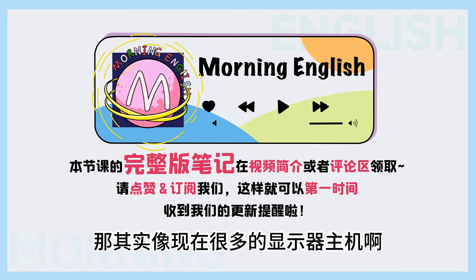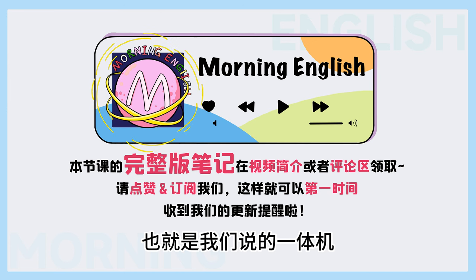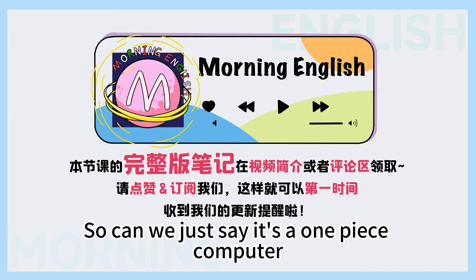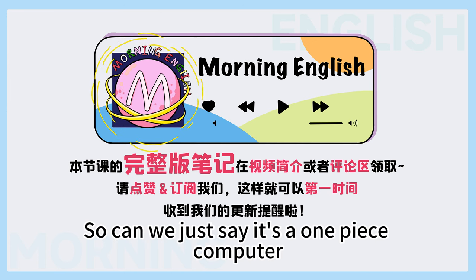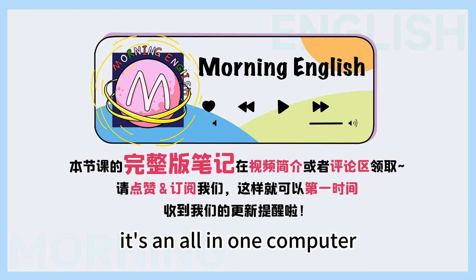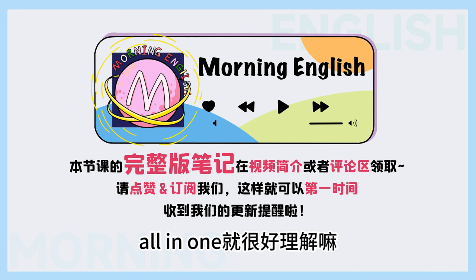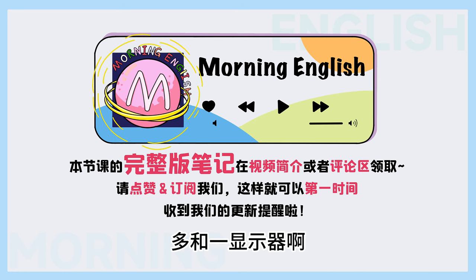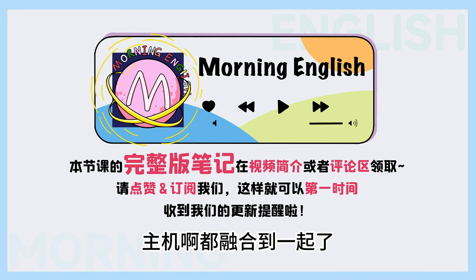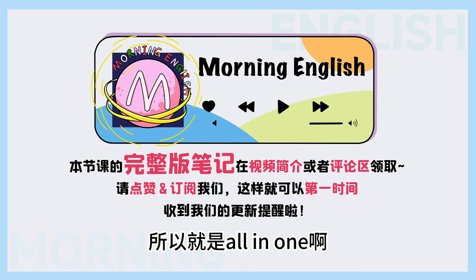那其实像现在很多的显示器、主机啊，都是连在一起的，也就是我们说的一体机。So can we just say it's a one-piece computer? Well, actually it's an all-in-one computer. All-in-one. 就很好理解嘛，多合一，显示器啊、主机啊都融合到一起了，所以就是all-in-one.